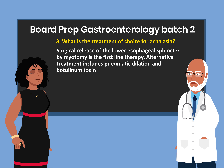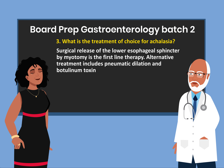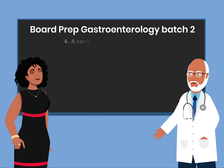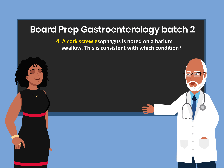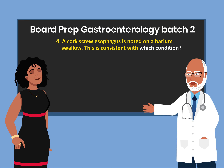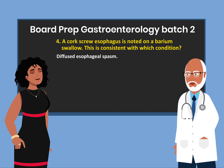Alternative treatment includes pneumatic dilation and botulinum toxin. Question 4: A corkscrew esophagus is noted on barium swallow. This is consistent with which condition? Diffuse esophageal spasm.